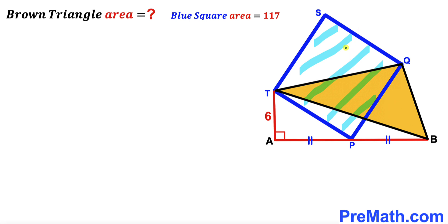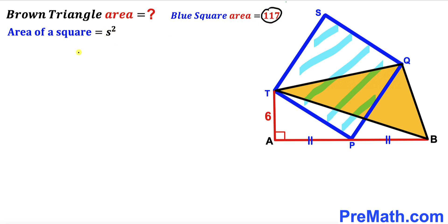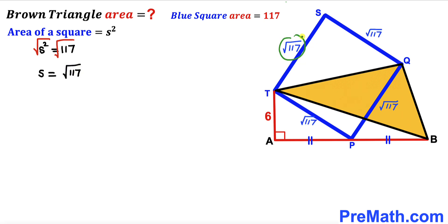Let's focus on this blue square whose area has been given to us as 117. Recalling the area of a square formula: area equals s squared, where s represents the side length of the square. Since the area is 117, I can write s squared equals 117. Taking the square root on both sides, our side length s turns out to be the square root of 117.